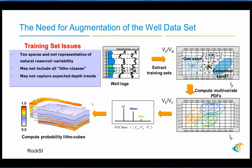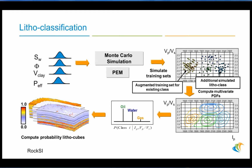We have an option in Rock SI to augment the datasets. We could augment an existing class with very sparse data points, or add an additional simulated lithophases classification — in this case, a very calcareous-type sandstone is included. We take our petroelastic model with water saturation, porosity, V-clay, and effective pressure, and combining it with our petroelastic model in Monte Carlo simulation, we can output these additional data points.